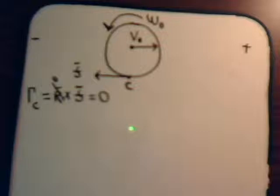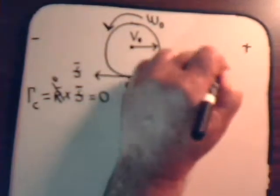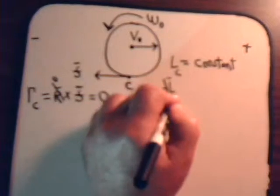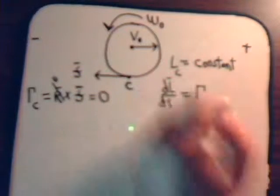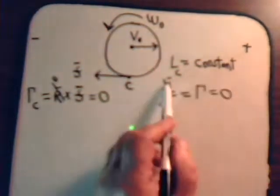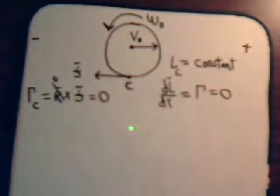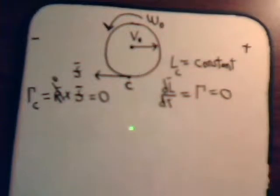That means the angular momentum about point C must be a constant. We can say that because the time derivative of angular momentum equals the torque. But if the torque is zero, that means the derivative is zero, which means angular momentum is constant. So we know that angular momentum about point C is conserved.